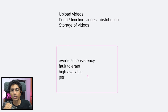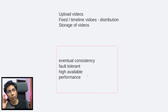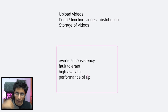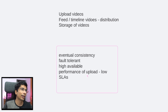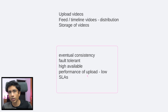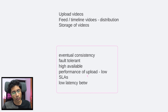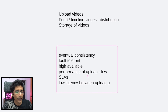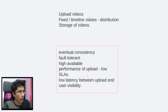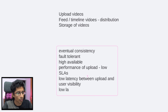In the sense that when a person uploads a video, they don't want to wait for a very long time before it actually gets published. And number two, as soon as you can send it to users, we should send it. So there should be low latency between upload and user visibility, and also there should be low latency when the video is being streamed or when people are watching it.